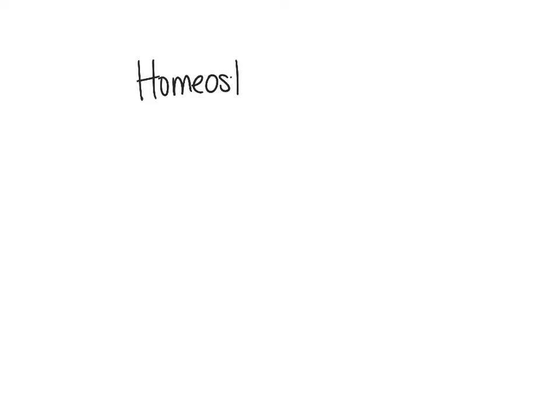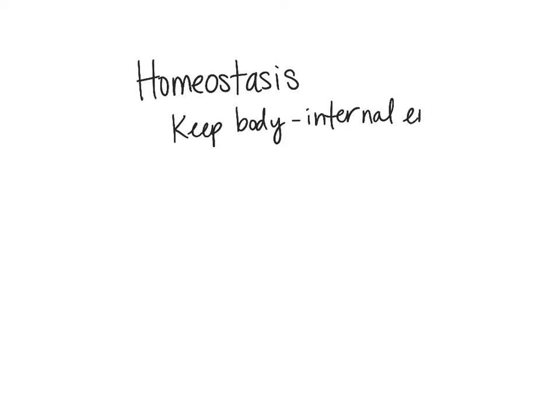Today we're going to be talking about homeostasis. Homeostasis is a way for the body to keep equilibrium — a condition of equilibrium in the body's internal environment due to constant interactions of different regulatory processes. Basically, it keeps the body's internal environment within normal limits.